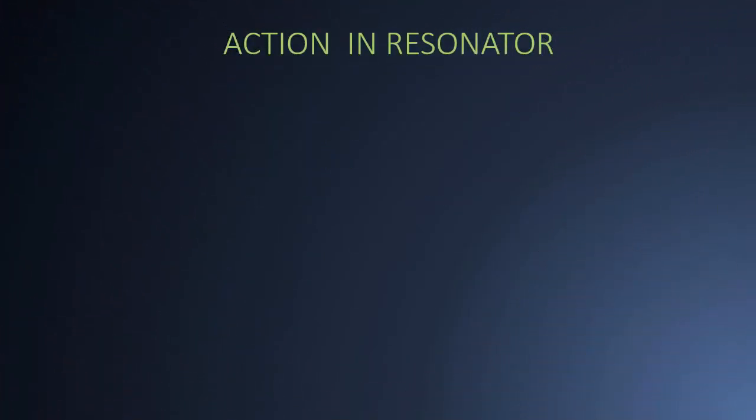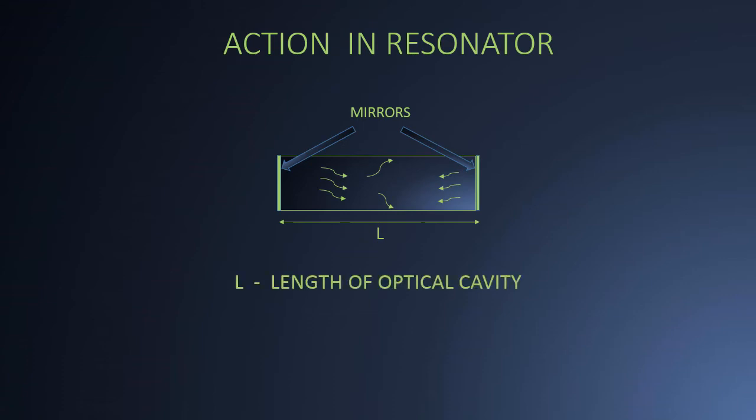Now let us come to the function of resonator. In this component, the intensity of light is amplified by multiple reflections of emitted light photons from two properly held mirrors. The space between two mirrors is called optical cavity and the distance between the mirrors is called length of the cavity.